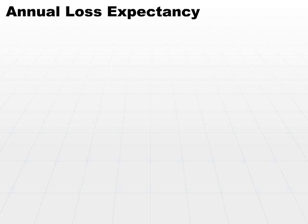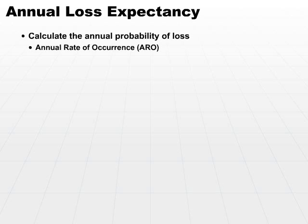Now we know what a single loss expectancy is — basically, whenever a loss occurs, we know how much money we're going to lose. But now we need to figure out what the annual probability of a loss is. The purpose of all this is to evaluate which controls we need to implement to protect us from specific losses. Losses all have dollar figures associated with them because we're doing quantitative risk assessment, and the budgetary folks are interested in how many losses we're going to incur in a year. That's why we use the annual rate of occurrence, or ARO.